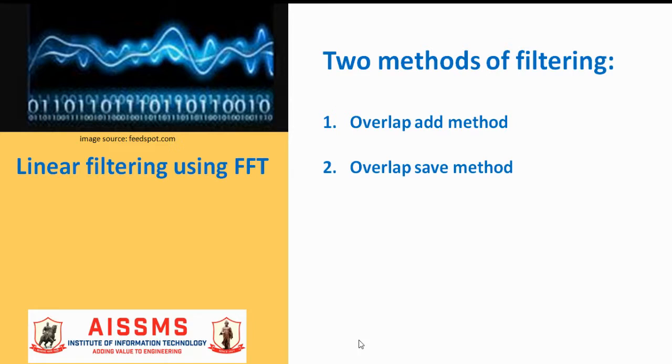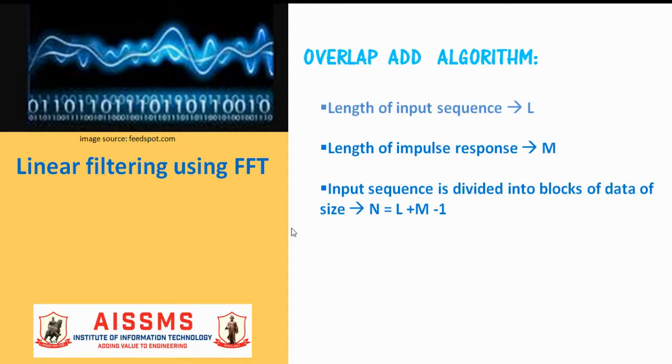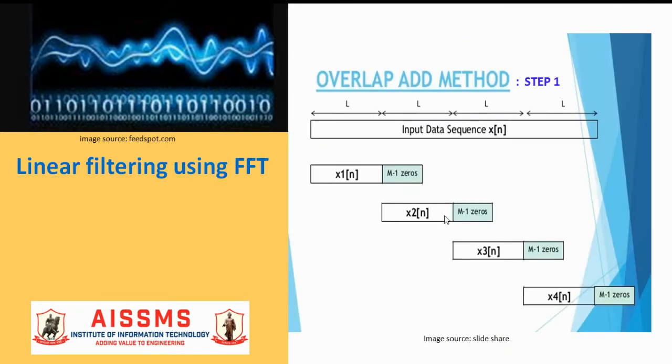There are two fast convolution or fast filtering methods. They are overlap and add method and overlap and save method. In the first method, the long input data sequence is broken into blocks of size L. M represents the length of the impulse response. Each of the input subsequence is divided into blocks of data of size N, where N is L plus M minus 1.